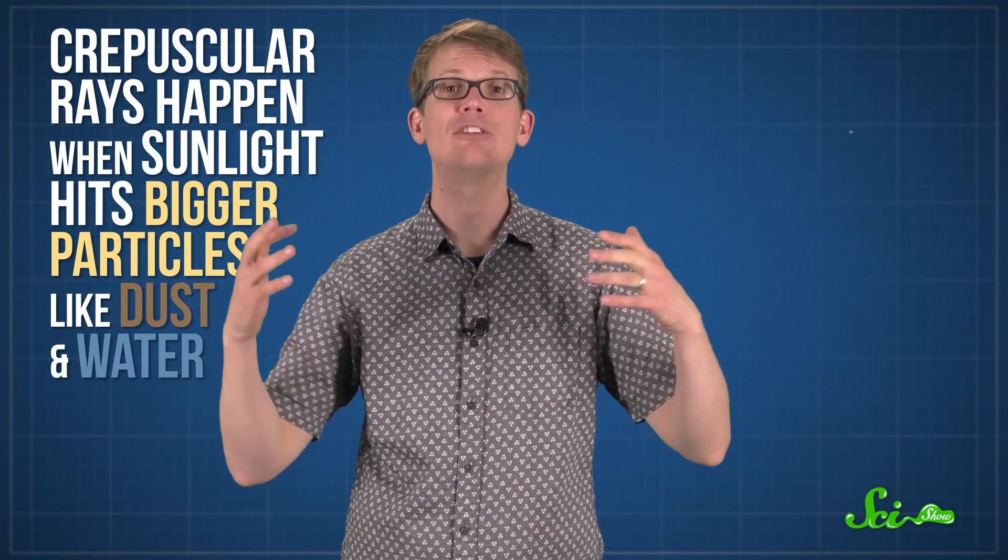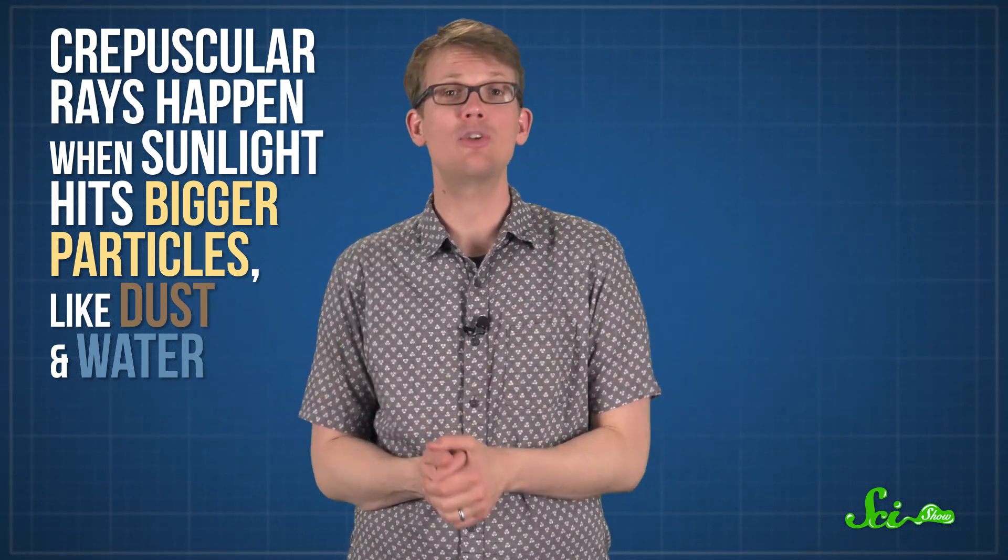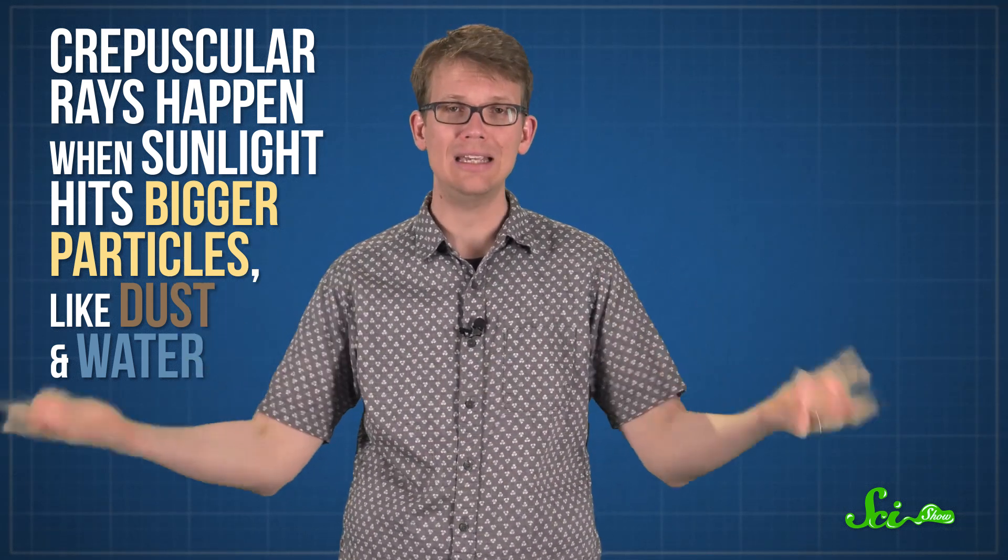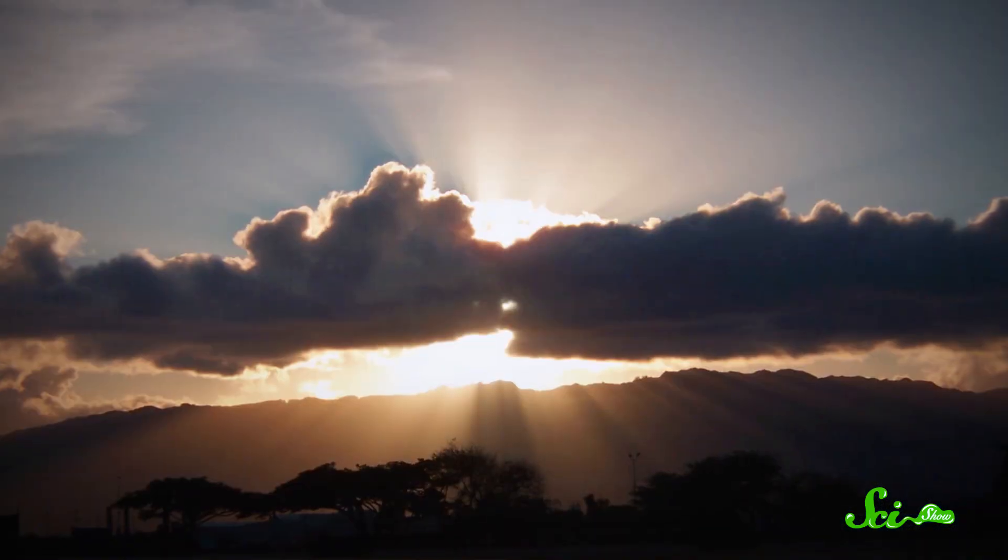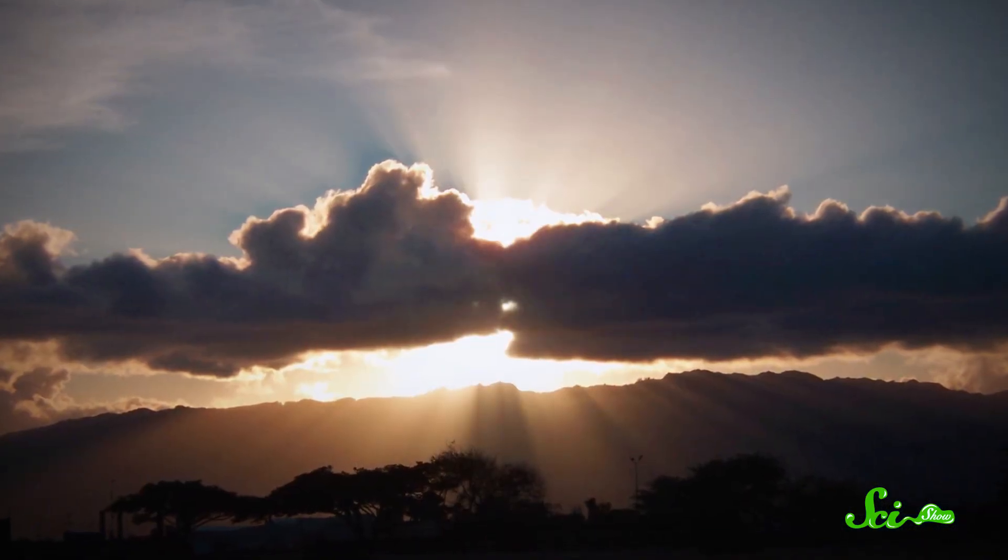Crepuscular rays happen when the sunlight hits bigger particles, like dust and water, which bounce all the light's colors pretty equally. And when we see all the colors of light at once, we call that white light, which is why a lot of crepuscular rays look white. Sometimes the rays don't look white, which just means that the light hitting them wasn't white to begin with. So crepuscular rays around sunset will be redder, since sunlight looks pretty red by that point.